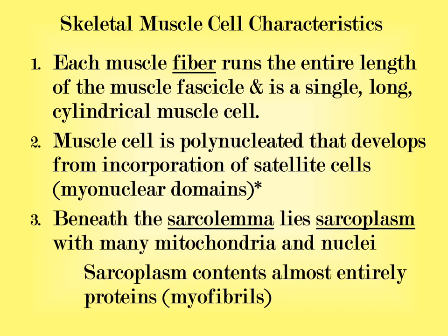We change some nomenclature here and use the prefix 'sarco-.' The sarcolemma is the cell membrane; the sarcoplasm is the cytoplasm. Just beneath the sarcolemma, within the sarcoplasm, there will be mitochondria and nuclei. The majority of the sarcoplasm is entirely proteins — myofibrils — with principal myofibrils including actin, myosin, titin, dystrophin, elastin, collagen, and regulatory proteins such as troponin and tropomyosin.